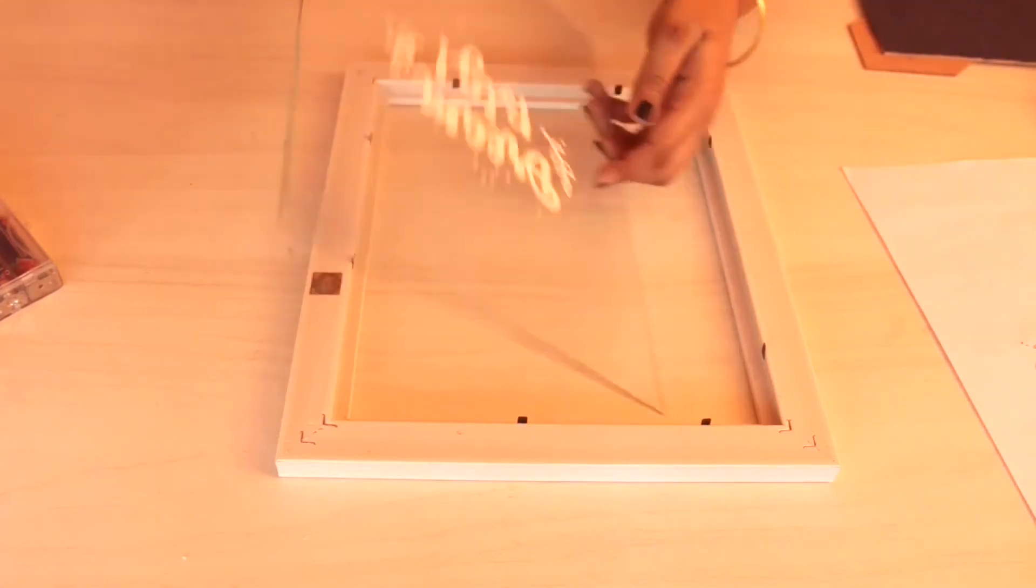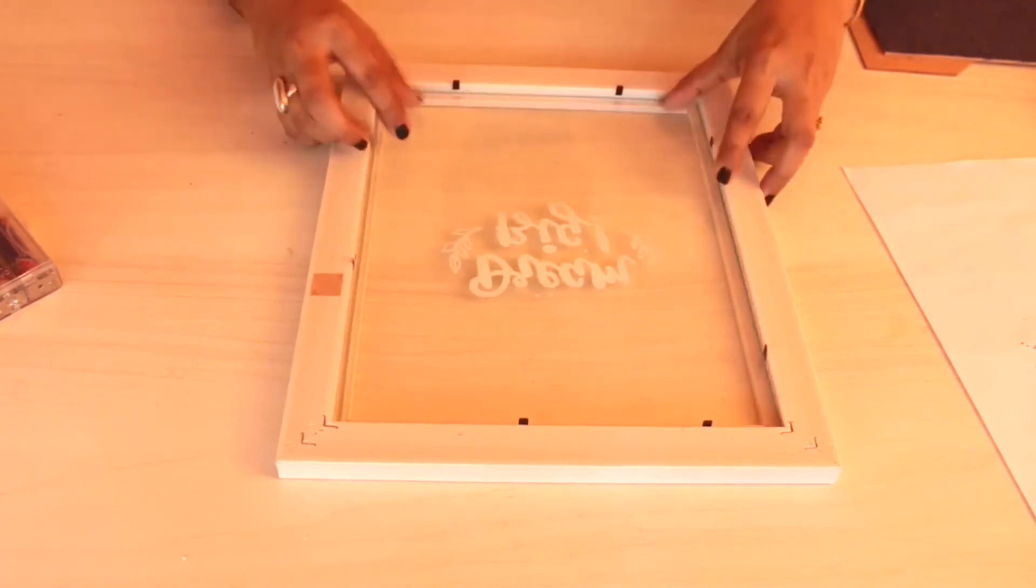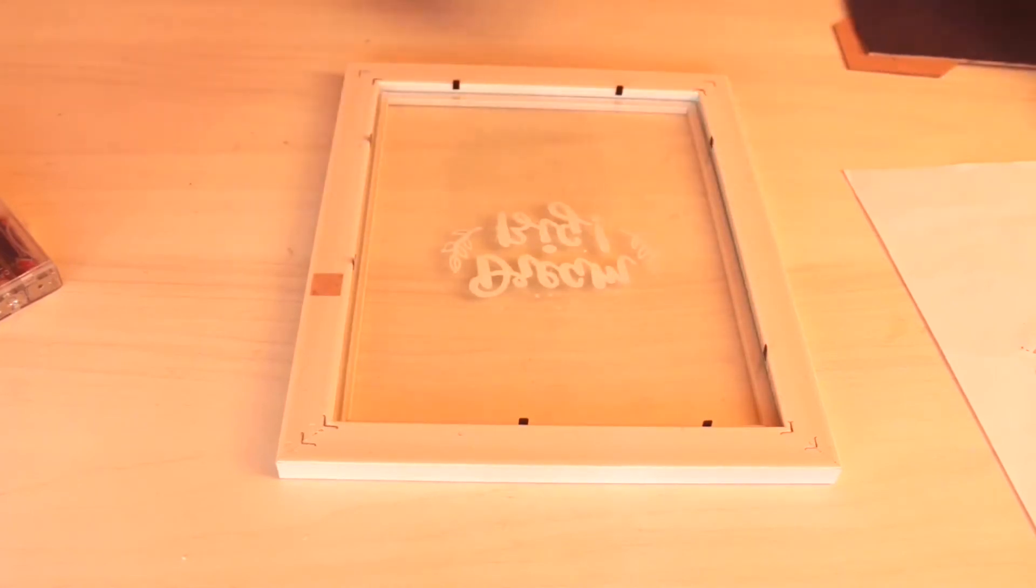Now start putting back the frame together. First put in the glass, and before putting the cardboard add a string battery light inside the frame and then close it.